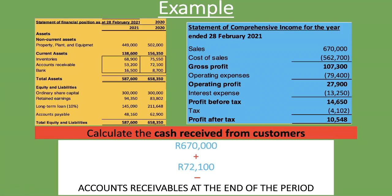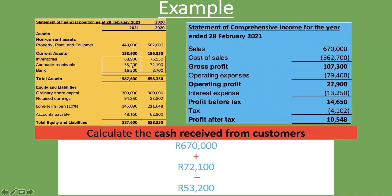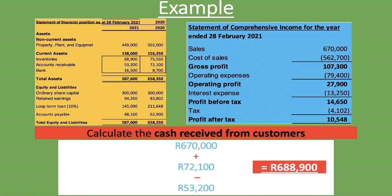We then deduct the accounts receivable at the end of the period, which is the 2021 figure of 53,200 rand. This gives us our cash received from customers: an answer of 688,900 rand. Now what is the logic behind this?